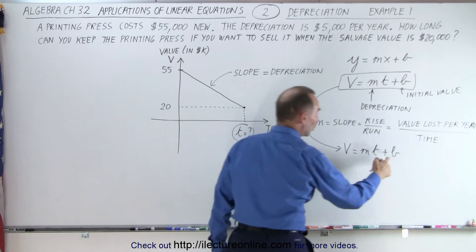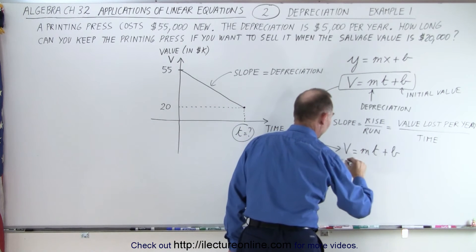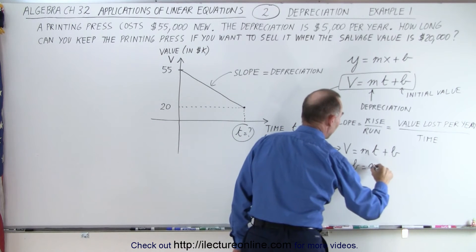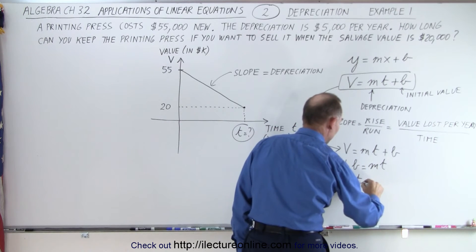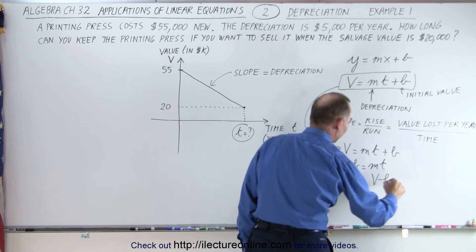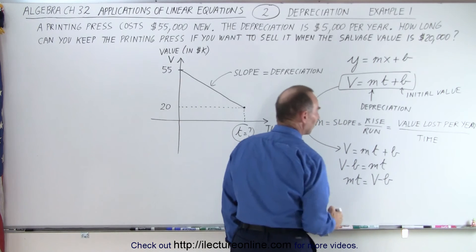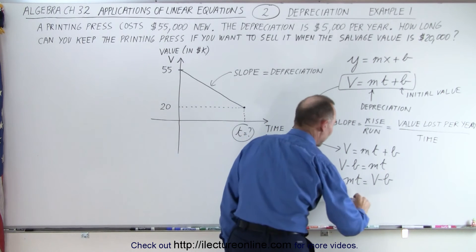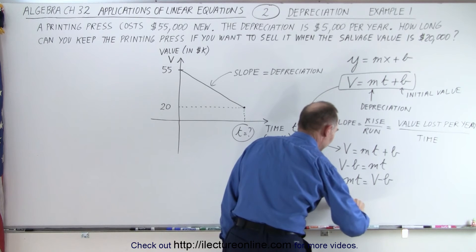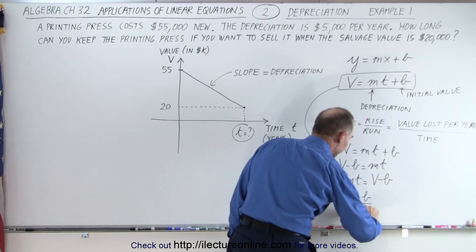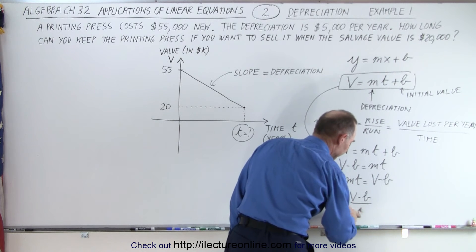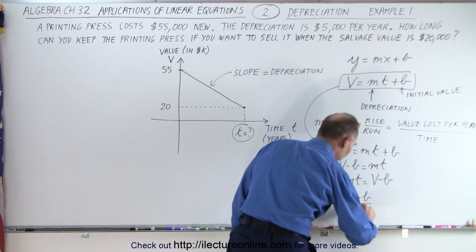So what I'm going to do is I'm going to move the b to the other side. So v minus b is equal to m times t. And then I'm going to turn the equation around. m times t is equal to v minus b. And finally, I'm going to divide both sides by m. So t is equal to v minus b divided by m, which is the slope.